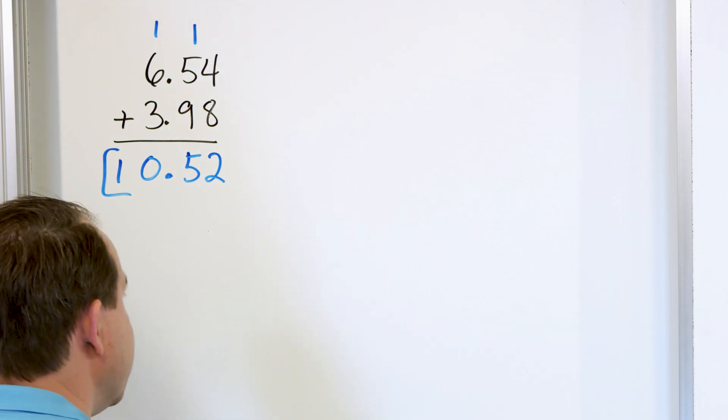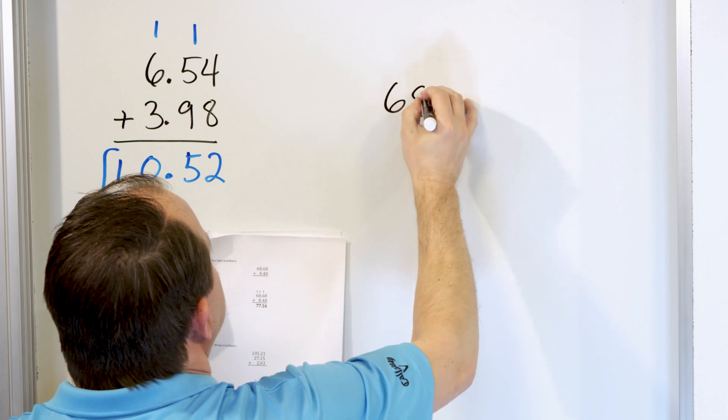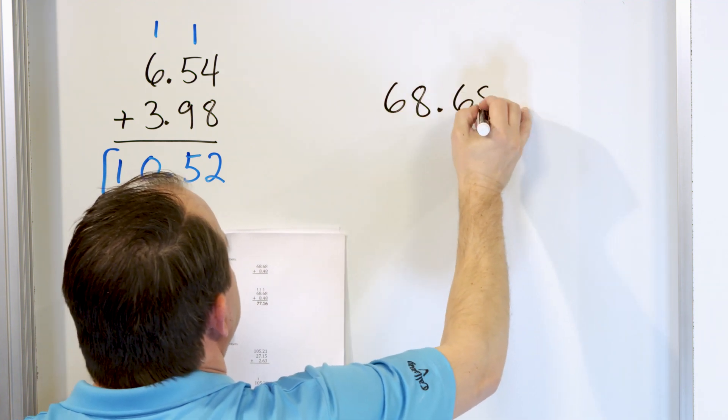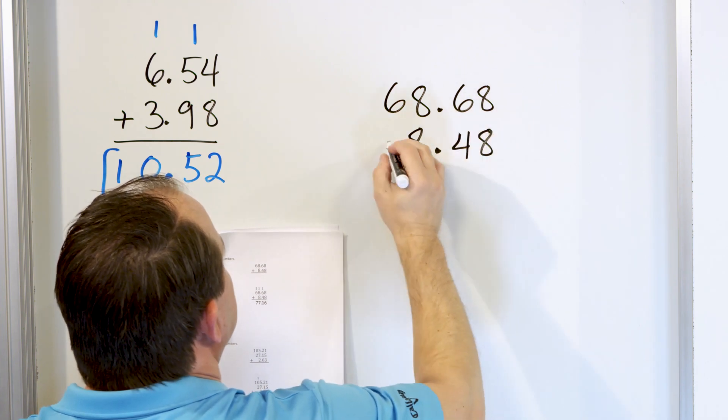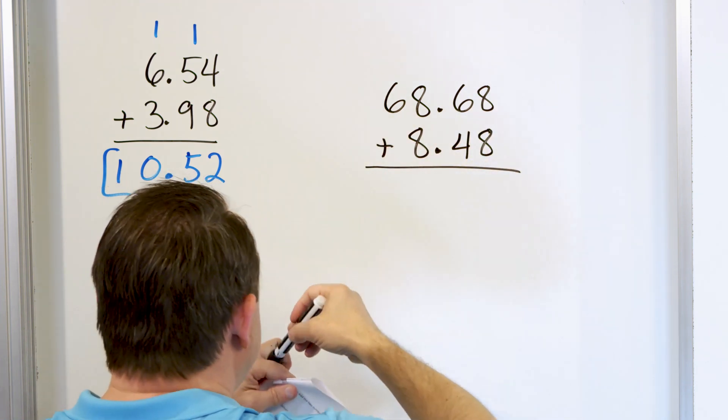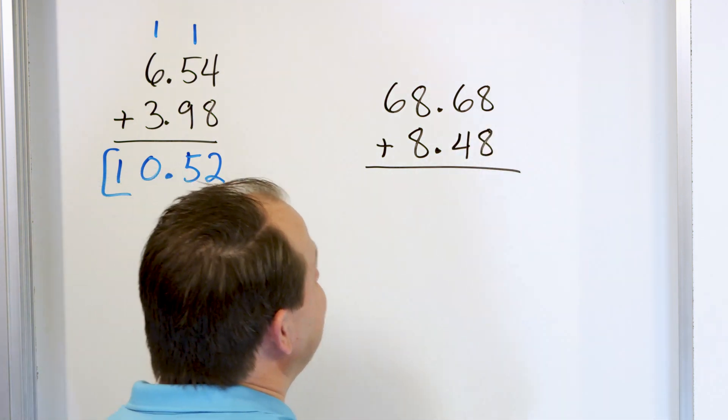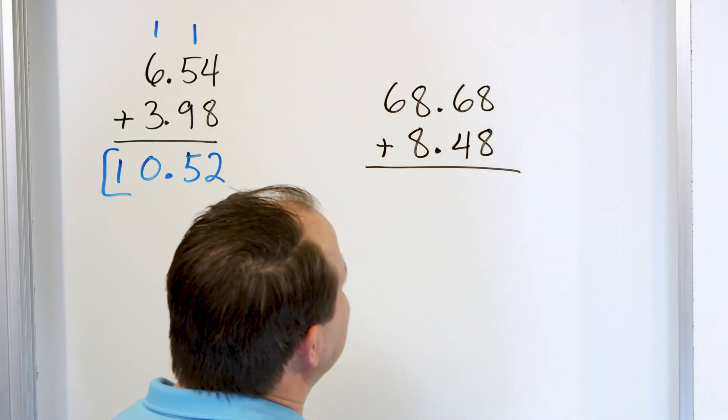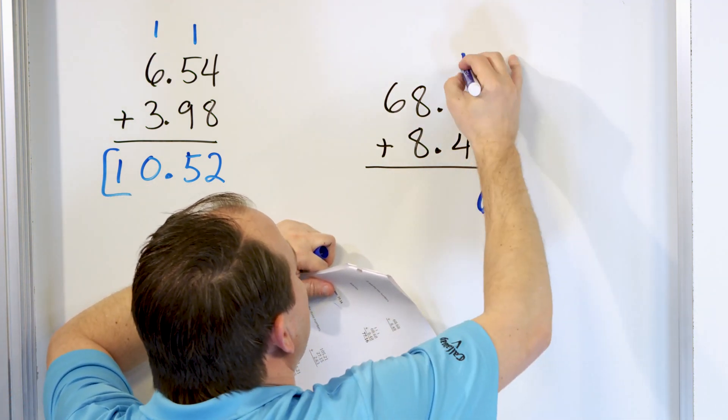Problem number 2. Let's say we have 68.68, and we want to add this to 8.48. What do we have? Right column, 8 plus 8. It's the same as 8 times 2, which is 16. You can add them on your fingers, that's fine, but we know the answer is 16, so let's just put the 6 there and carry that 1.